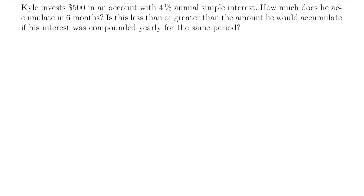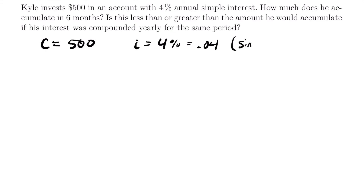Let's do another example. Kyle invests $500 in an account with 4% annual simple interest. How much does he accumulate in six months? We know his initial deposit is $500 and his interest rate is 4%, or 0.04, as a simple interest rate. We want to know his accumulation after six months. Since simple interest is always calculated in years for this course, we need to convert: 6 months out of 12 months in a year gives us t equals 1/2 year.